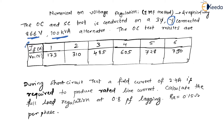IF is the field current in amperes and it is DC. The next value is VOC — it is AC only. Now, any voltage values given in a problem, on a nameplate, or anywhere else are always line voltages. This is a very important point to remember.